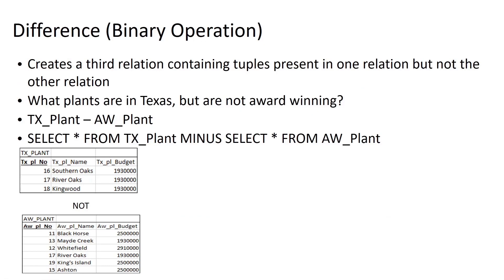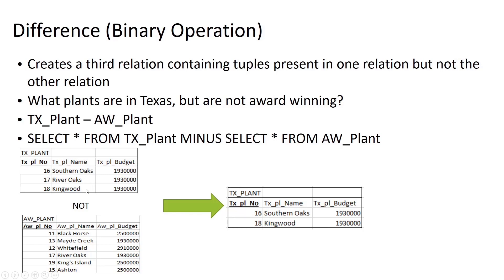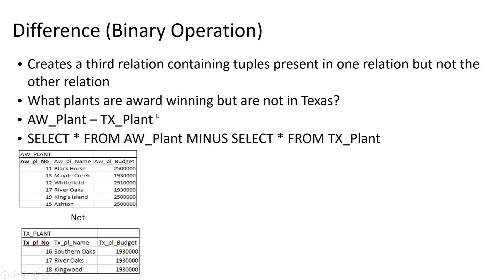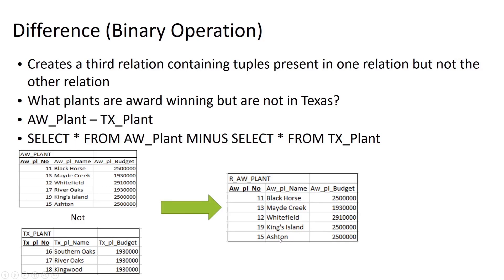The difference operator creates a third relation containing tuples present in one relation but not the other, and can go in either direction. To find plants in Texas but not award-winning: Texas_plant − AW_plant, or in SQL: SELECT * FROM Texas_plant MINUS SELECT * FROM AW_plant — returning Southern Oaks and Kingwood. Going the other direction, to find award-winning plants not in Texas: AW_plant − Texas_plant, returning Black Horse, Maid Creek, Quitefield, Kings Island, and Ashton — all plants except River Oaks.